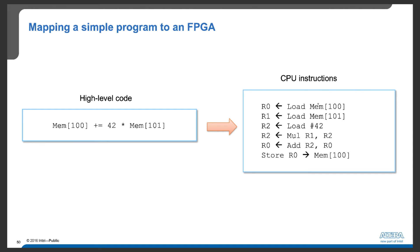First, we'll load the data from memory location 100, and next we'll load the data from location 101 into R1. Then we'll load the constant number 42 into register R2. Next, we perform the multiplication operation on R1 and R2, which computes 42 times the data at memory location 101. The result of this multiplication is stored into R2.